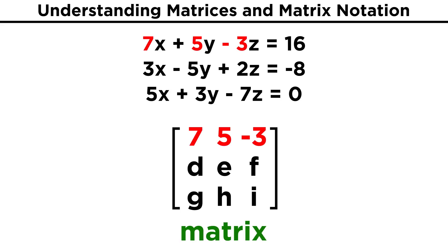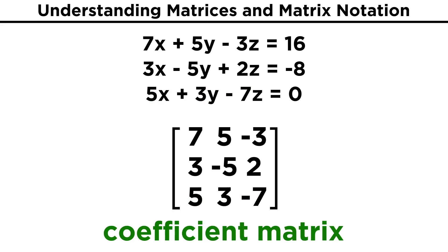The three coefficients in the first equation can make up the first row. The three coefficients in the second equation can make up the second row, and the three coefficients in the third equation can make up the third row. We have just constructed a coefficient matrix.